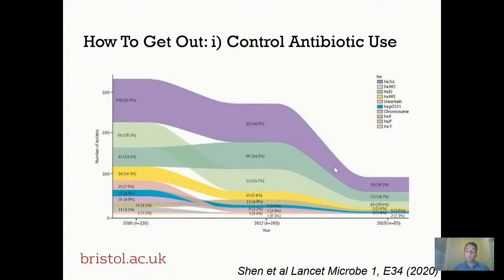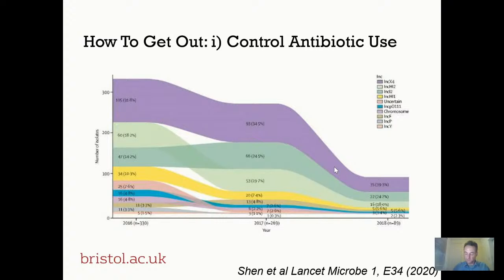Those are some thoughts about why we are in our current situation. What can we do by way of possible interventions? The O'Neill report makes 10 separate recommendations about how one might counter bacterial infections and the antibiotic resistance crisis. The first of these is to be smarter about our use of antibiotics. Resistance can come at a cost for bacteria in the sense that mutations or modifications conferring antibiotic resistance may make the organism less fit compared to its antibiotic-susceptible brethren.